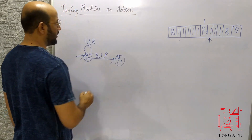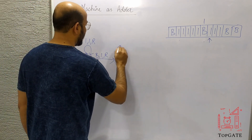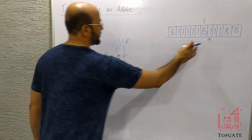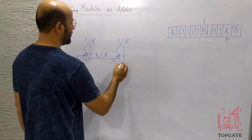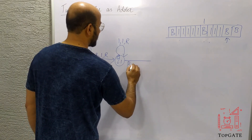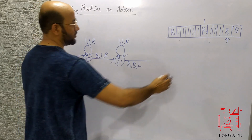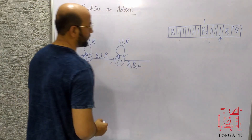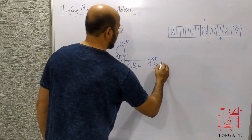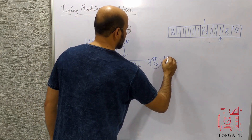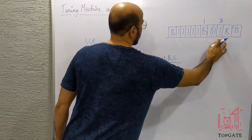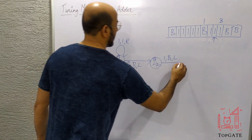At state q1, skip all the ones again with a self-loop: if you find one, keep it as one and go right. The pointer reaches the next blank B. Here, keep it as B and go left. The pointer now points to the last one of the second group. Change that one to B and go left, reaching state q3.